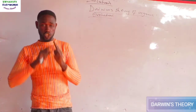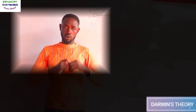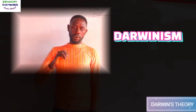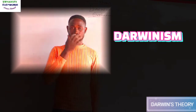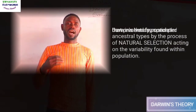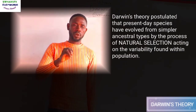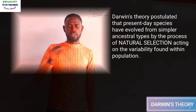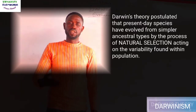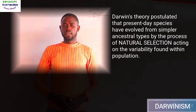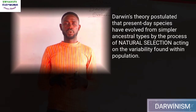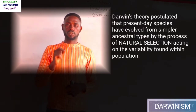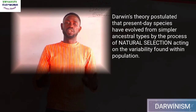Charles Darwin's theory of organic evolution, known as Darwinism, states that present-day species of plants and animals arose from simpler ancestral types by the process of natural selection, acting on the variations found within a population.